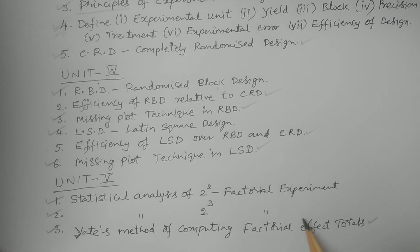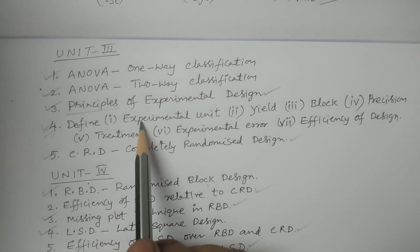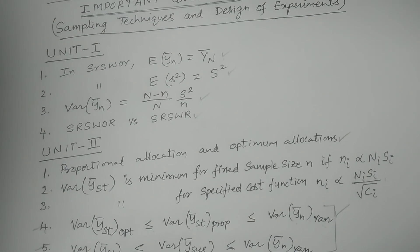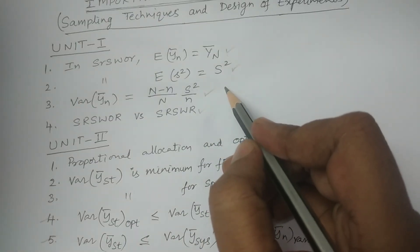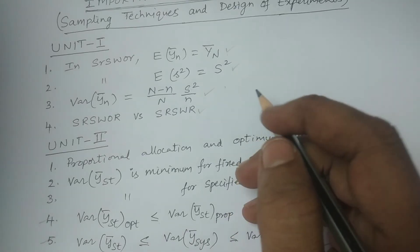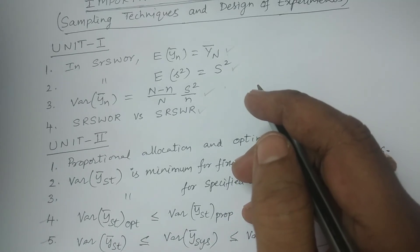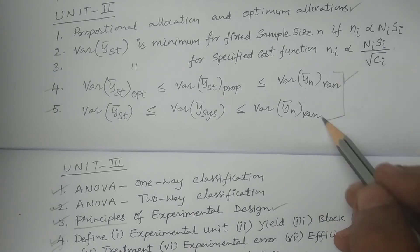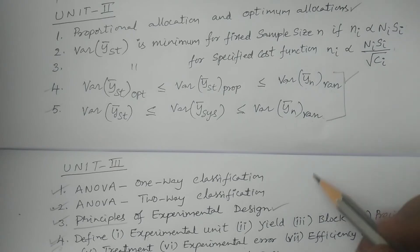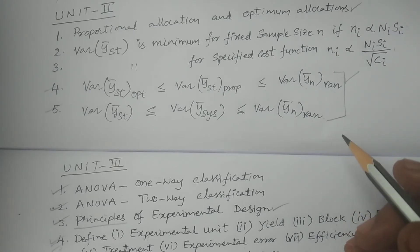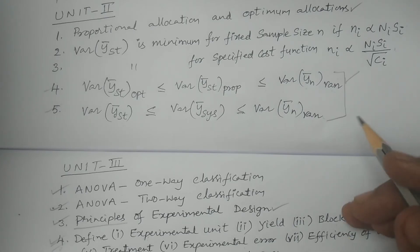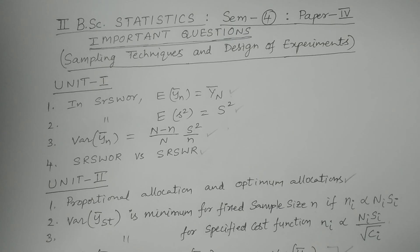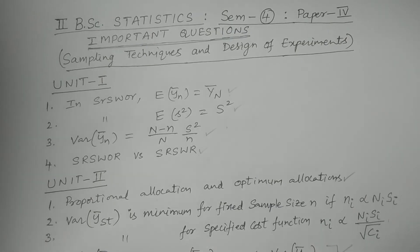Cover all units — Unit 5, Unit 3, Unit 1, Unit 2 — with 10-mark and 5-mark questions in each section. This is what Semester 4, Paper 4 — Sampling Techniques and Design of Experiments — is about. Thank you very much, and all the best.